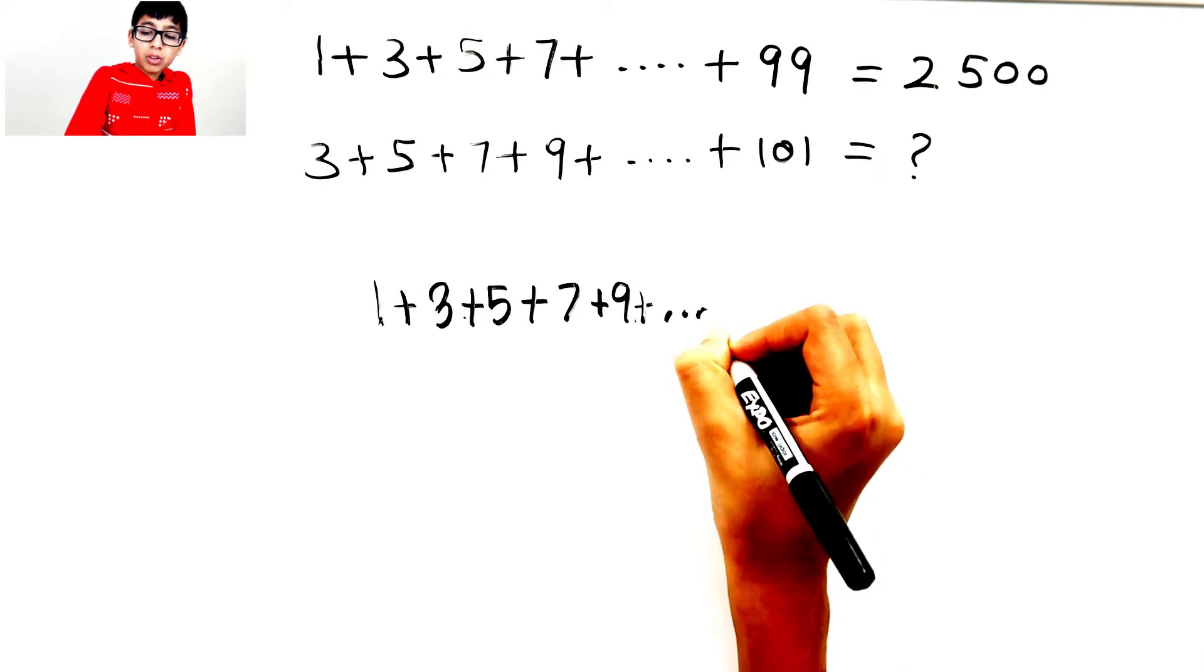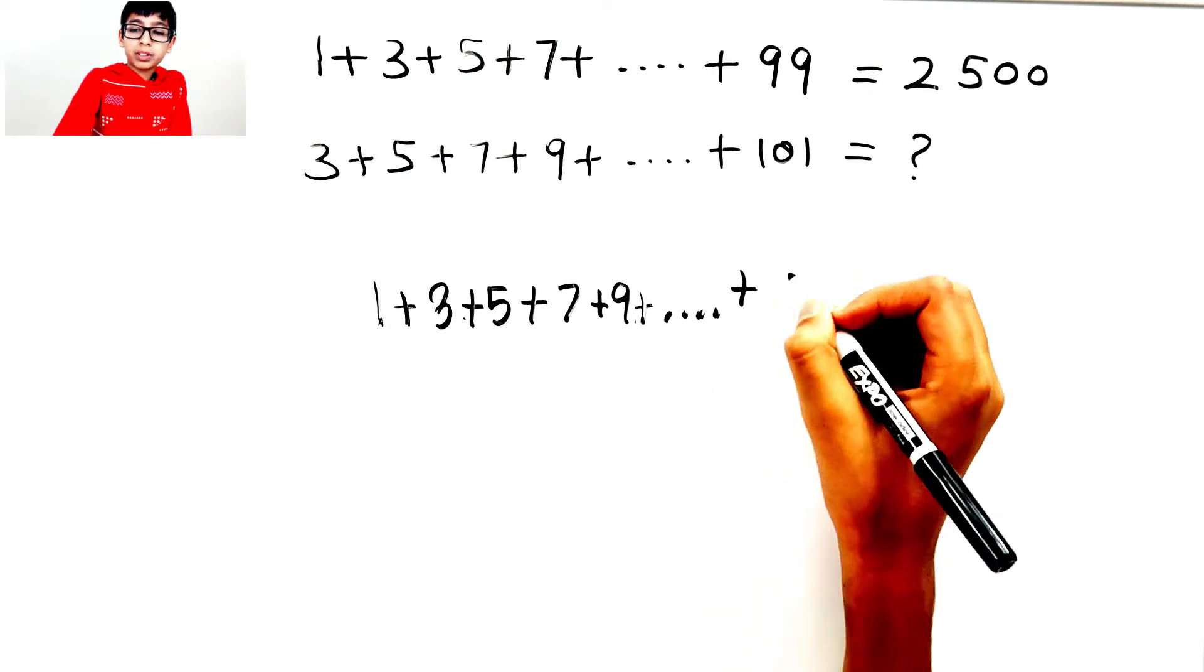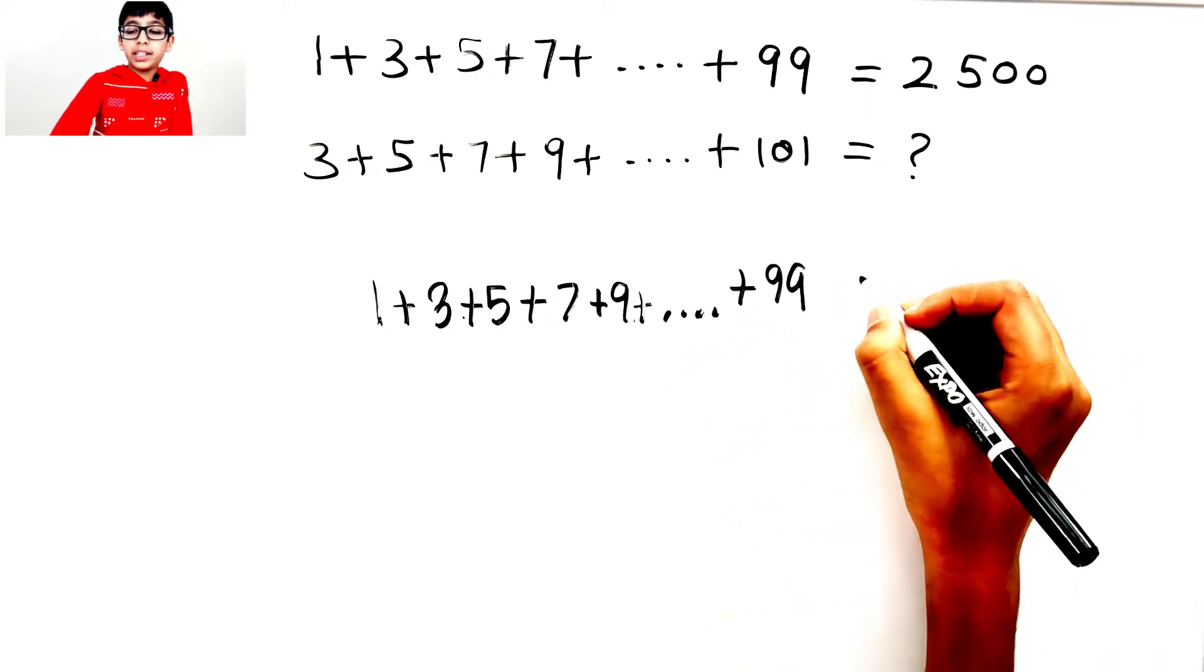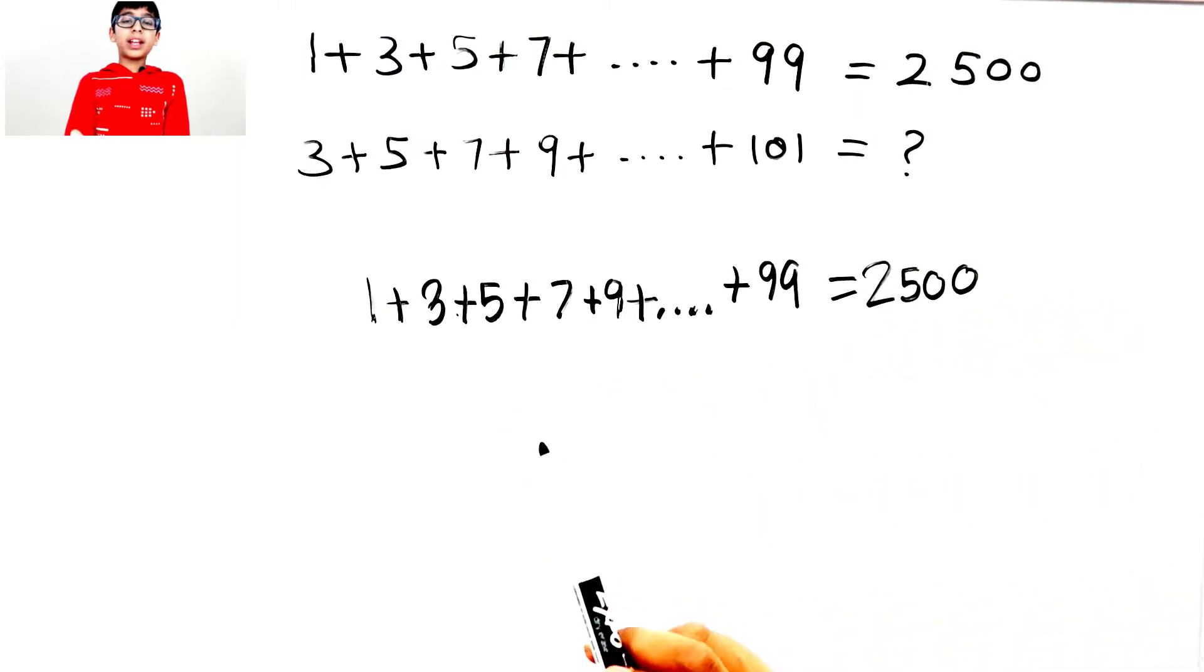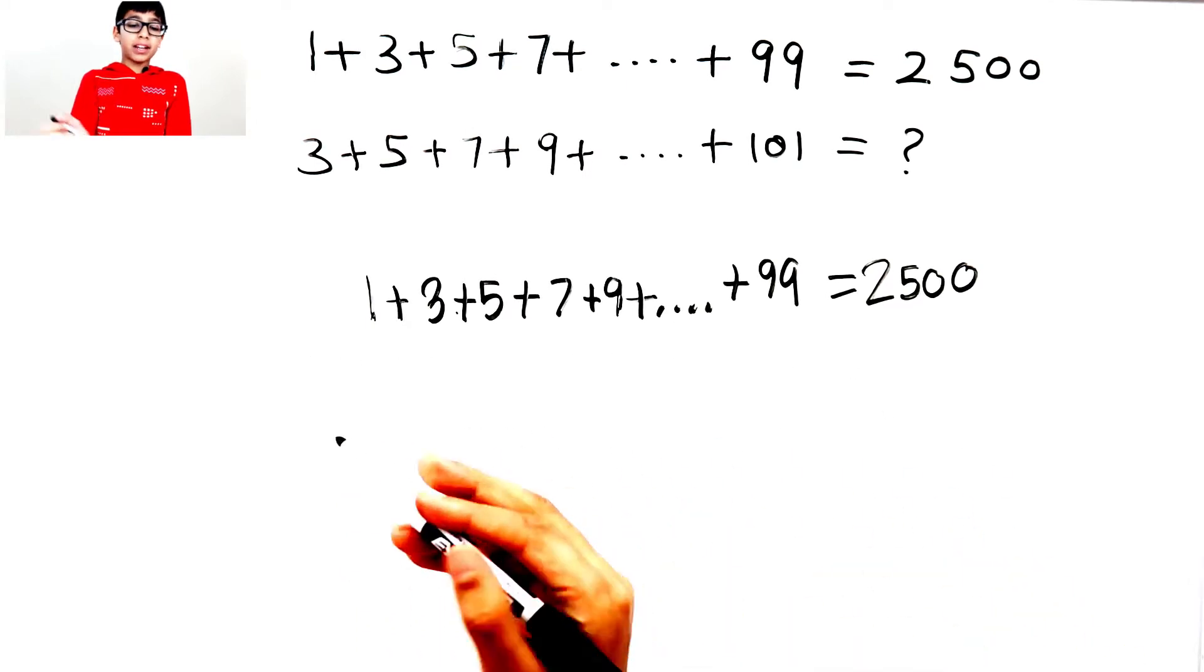And it goes on and on all the way to 99, which equals 2500. Now let's extend this again.